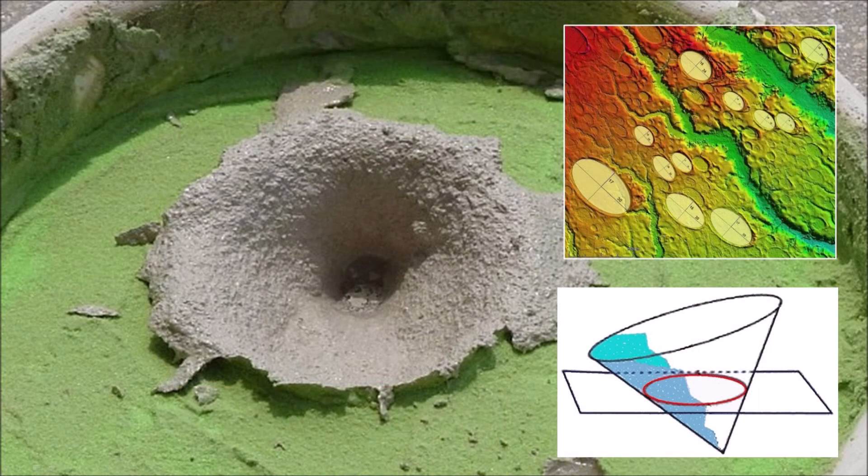Well-preserved Carolina Bays are mathematically elliptical, and this implies that they originated as inclined conical cavities or penetration funnels that would look elliptical when viewed from above. LiDAR images of the Carolina Bays can be easily fitted with ellipses to demonstrate this fact.